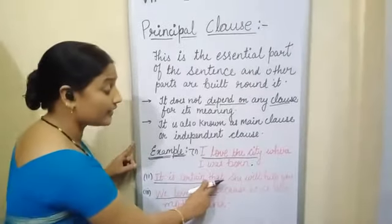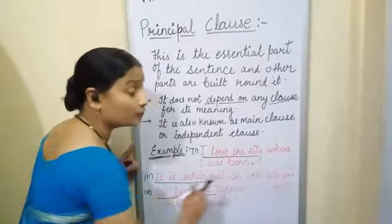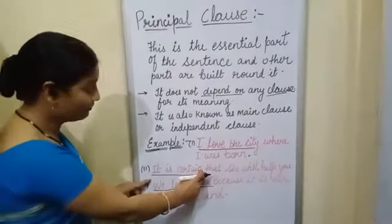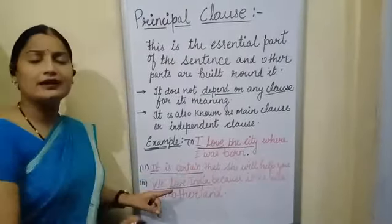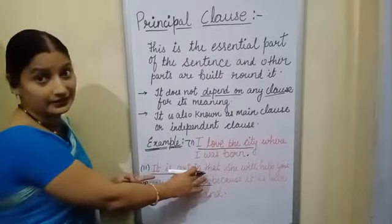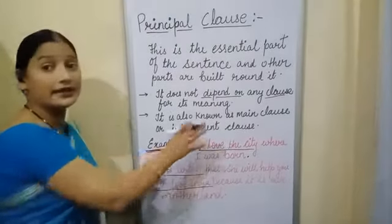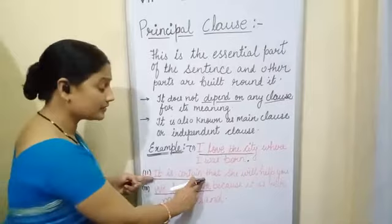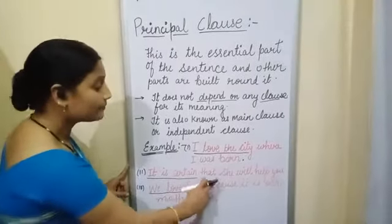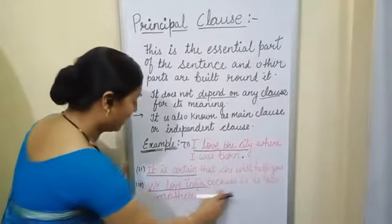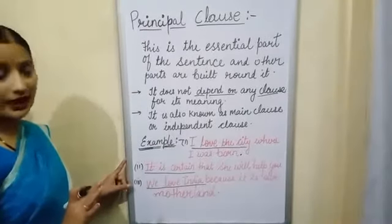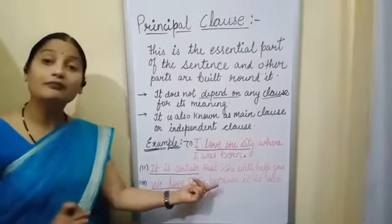Example two: 'It is certain that she will help you.' Here, 'It is certain' is the main clause because it is not depending upon any other clause. Example three: 'We love India because it is our motherland.' So 'We love India' is again the main clause.